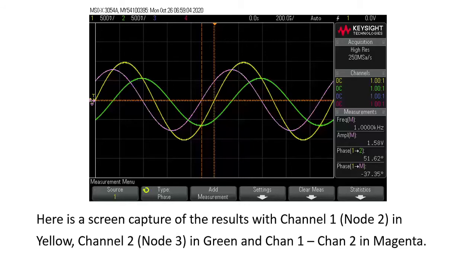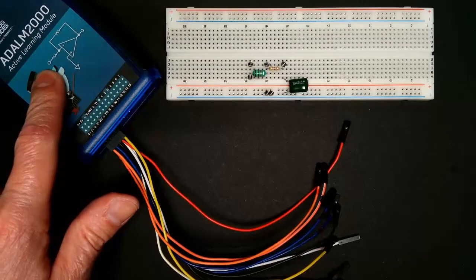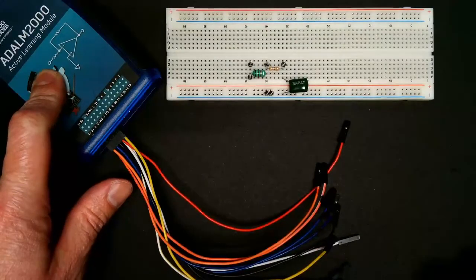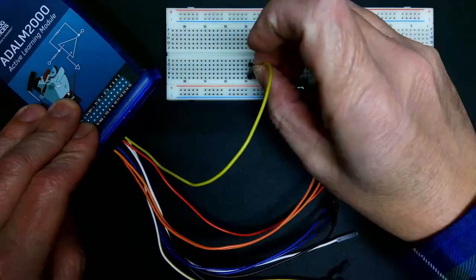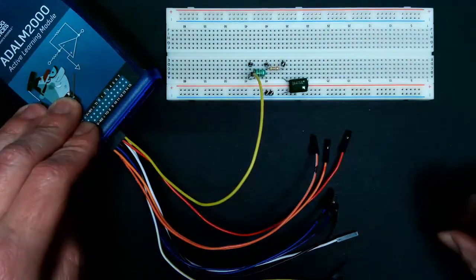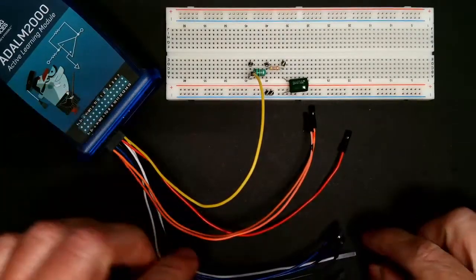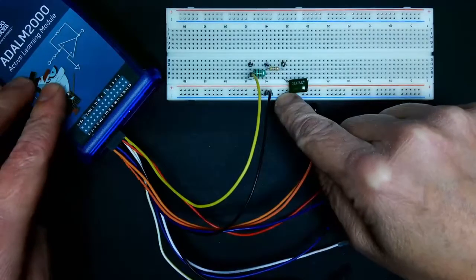The next part we want to look at is how we can use the ADALM-2000's differential oscilloscope input to do that measurement a lot easier. Now we want to use the ADALM-2000 and wire that up in our circuit using the differential inputs on the oscilloscope. The first thing I want to do is take the yellow lead for the signal generator and attach that to the input of the circuit. The signal generator has to be referenced to ground, so I'm going to take one of the black leads and tie that to the ground bar, which is also connected to the one end of the capacitor.